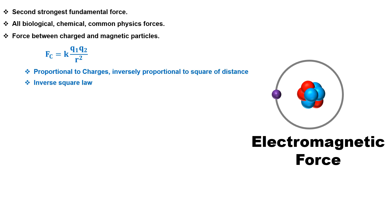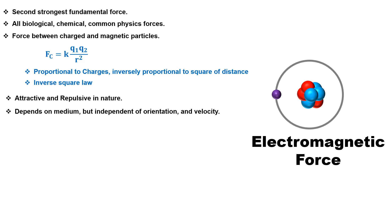Electromagnetic force is also an inverse square force like gravity. But where gravity is only of attractive nature, the electromagnetic force is found to be both attractive and repulsive in nature. Electromagnetic force depends on medium but not on orientation and velocity of the particles. As we know, the Coulomb force only appears between charged particles, meaning all charged particles experience electromagnetic force. But do neutral particles experience electromagnetic force, such as the neutron?